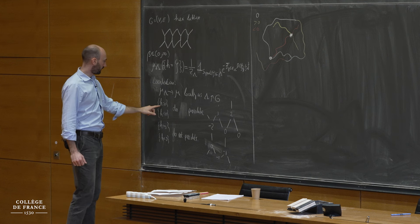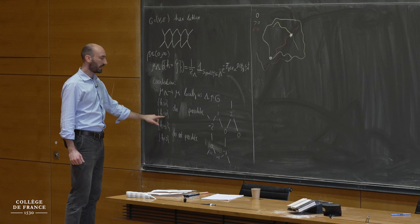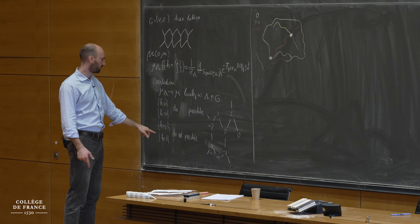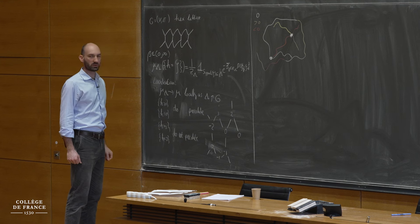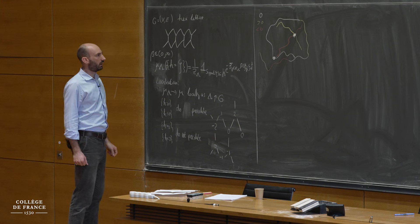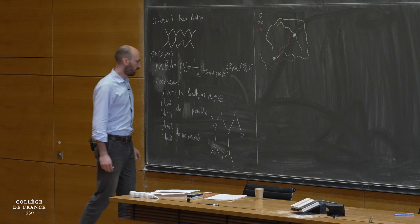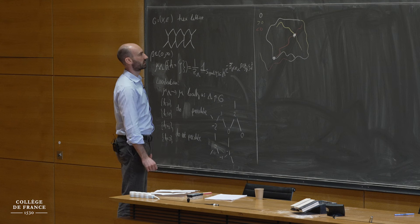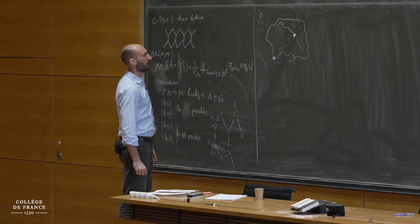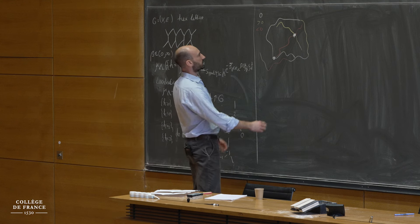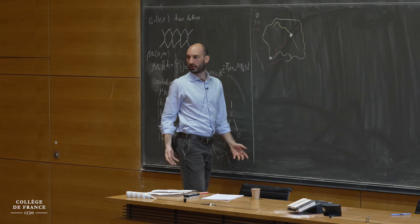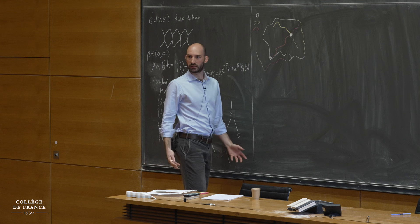We proved that H greater or equal than zero percolates, and we proved that H less or equal than zero percolates. But if you replace the greater equal or lesser equal by strict, then you lose the percolation. In this picture, since the graph is planar, these observations have to respect the planarity. It means you have these yellow and red clusters, but they're finite. But if you take only the red clusters and add the white, then suddenly they percolate.